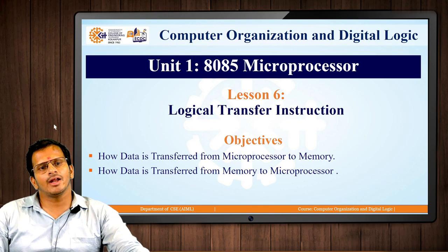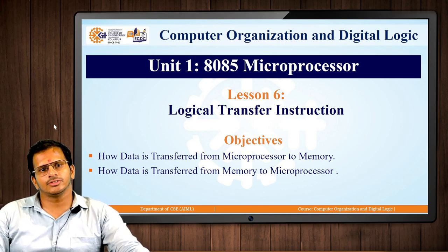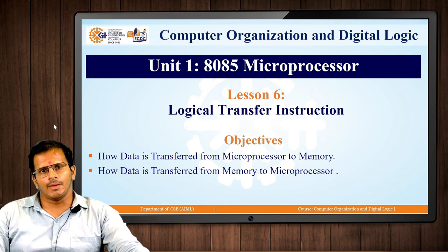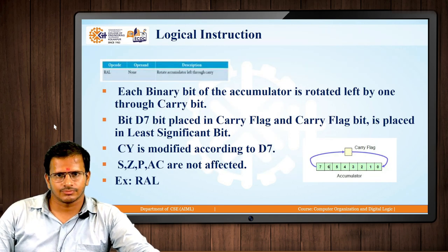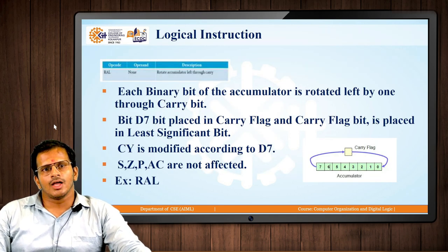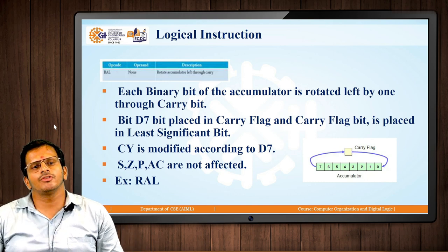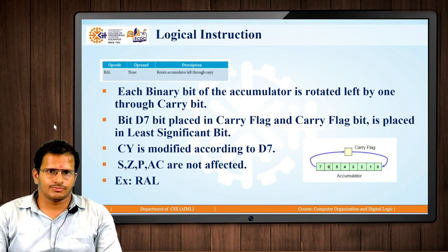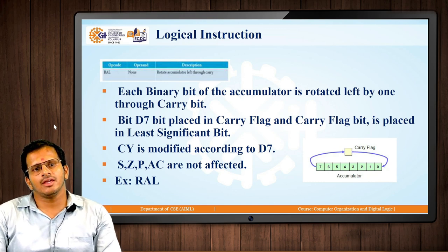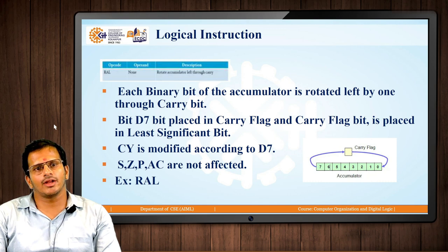Here we will understand how data is either transferred from the register or memory location pointer to the memory, and also how to transfer content from memory to the microprocessor. The instructions we had previously seen were regarding AND, OR, and XOR operations — ANA, ANI, XRA, XRI, ORA, and ORI.